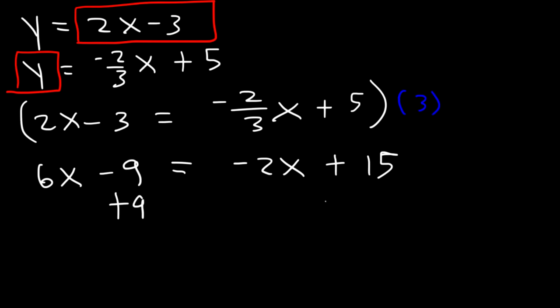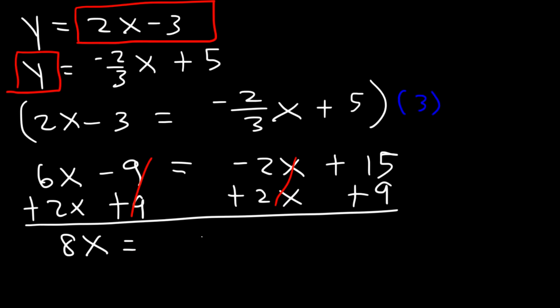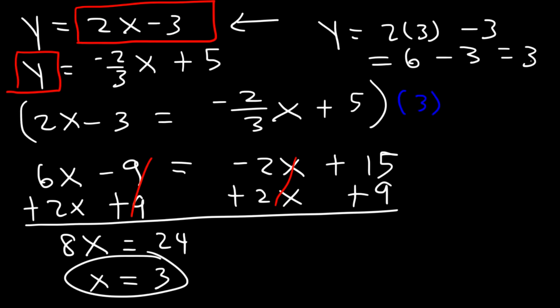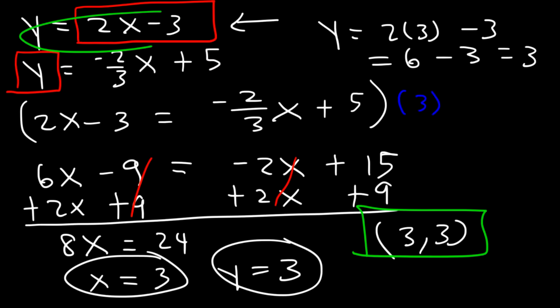Now, let's add 9 to both sides and add 2x to both sides. 6x plus 2x is 8x. 15 plus 9 is 24. 24 divided by 8 is 3. Now, let's plug that into this equation. 2 times 3 minus 3. 2 times 3 is 6. 6 minus 3 is 3. So y equals 3. So therefore, the answer is indeed 3, 3, which is the point of intersection between these two graphs.